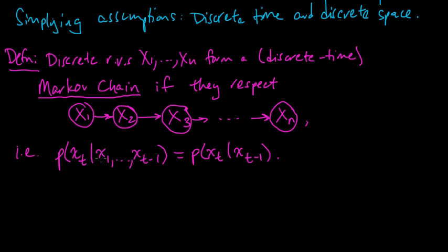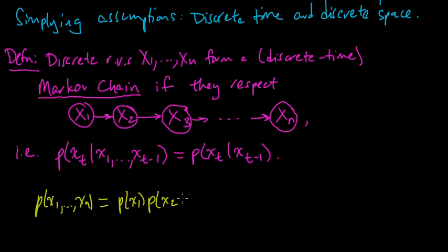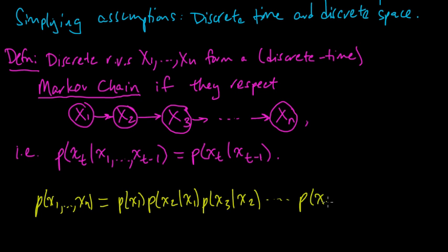Now let's check the other direction: if we have the conditional independence statement, does that imply the random variables respect the graphical model? What does it mean to respect the graph? It means the joint distribution factors as P(X1) · P(X2|X1) · P(X3|X2) · P(X4|X3) · ... · P(Xn|X_{n-1}).